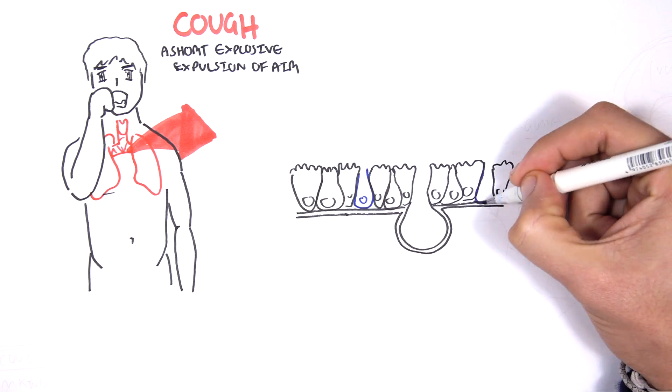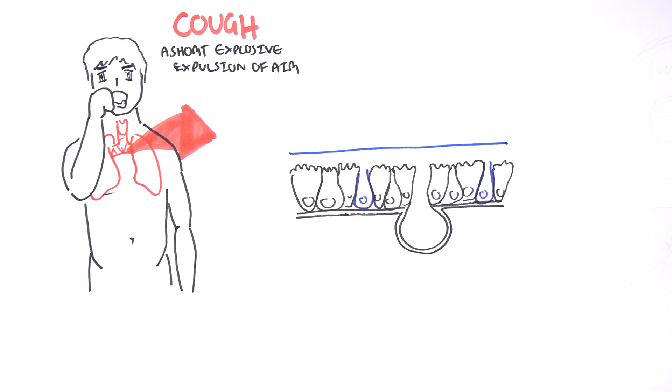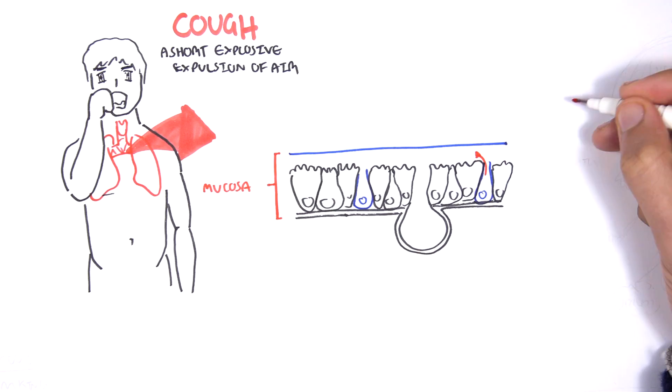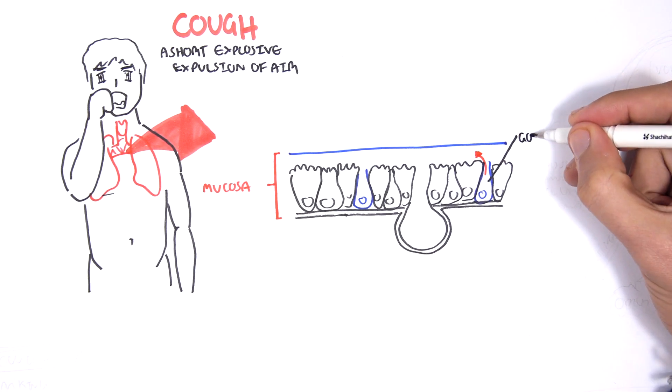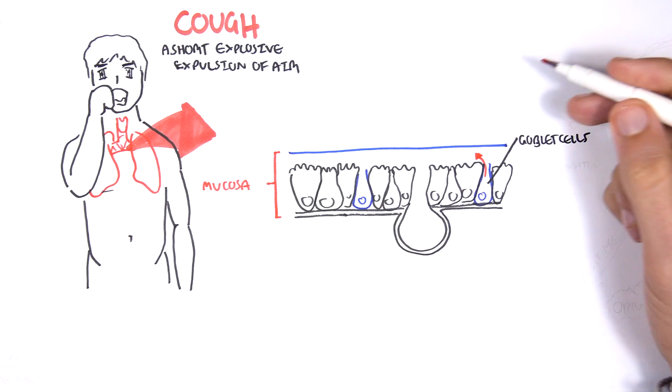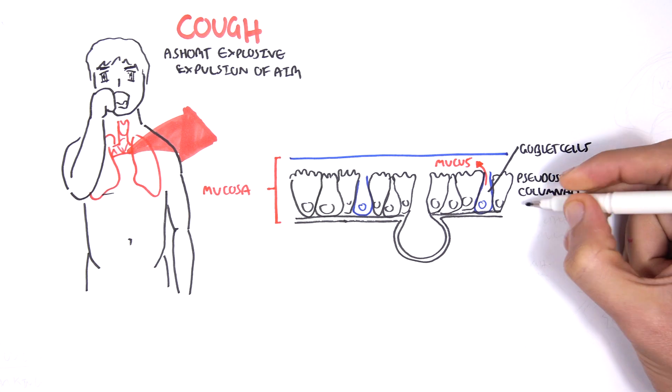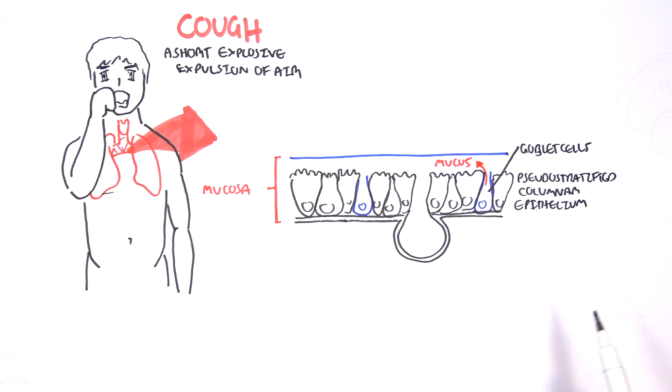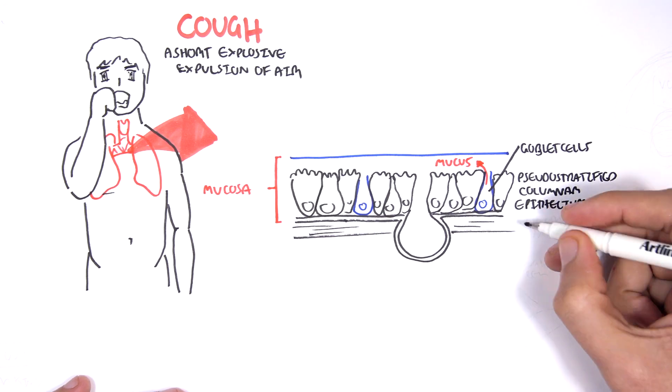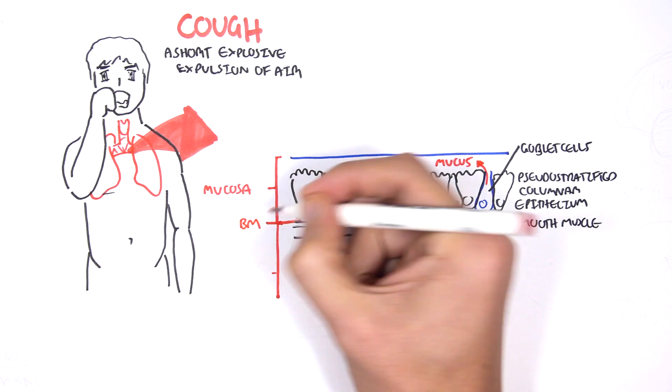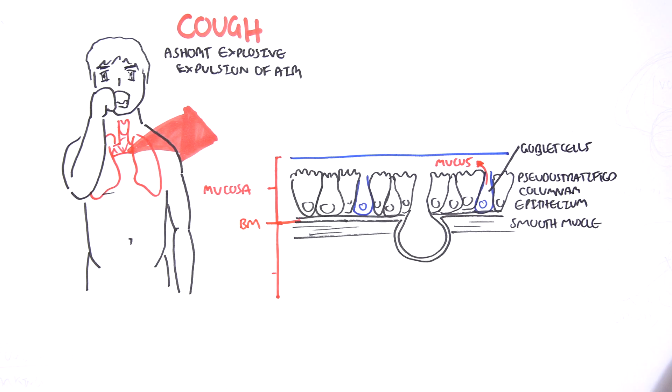So here we have our mucosa layer. The mucosa layer contains cells, such as goblet cells, which produce mucus. The first layer of the mucosa cells are made up of the pseudo-stratified columnar epithelial. And these cells are ciliated. Below it, we have the basement membrane and a small part of smooth muscle.